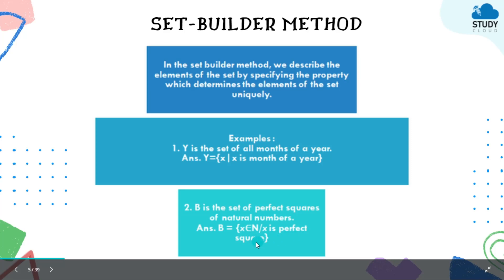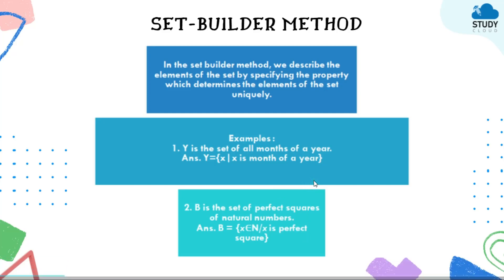So we know that X is a natural number, is a part of natural numbers, and X is a perfect square. So in this way you have to write set-builder form.